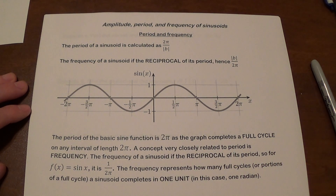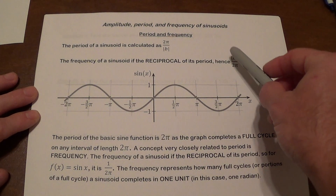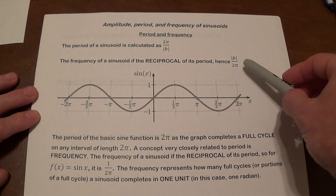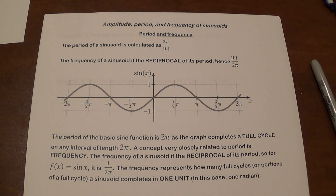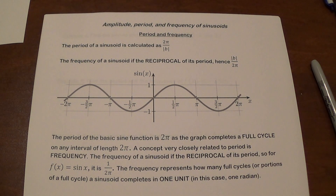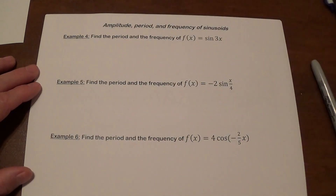To find the frequency, it is the reciprocal of the period — so it's the absolute value of b divided by 2π. For the basic sine function, its full revolution is 2π, so its frequency is 1 over 2π. Frequency represents how many full cycles, or portion of a full cycle, a sinusoid completes in one unit — in this case, one radian.